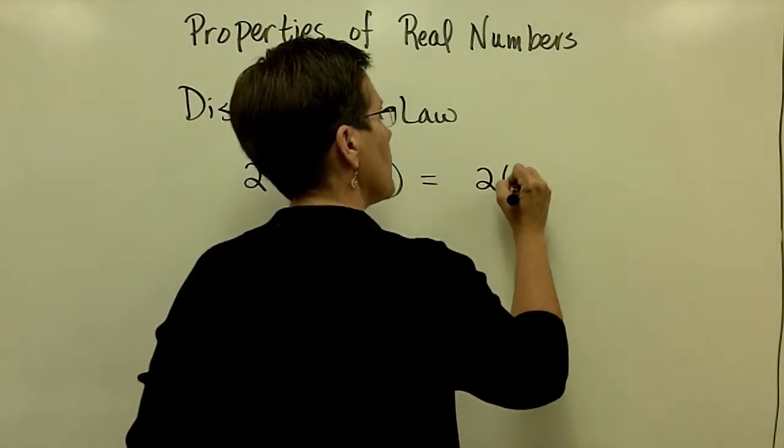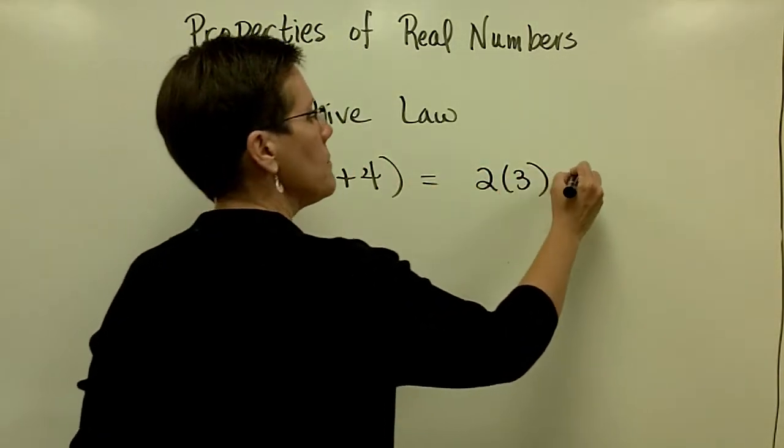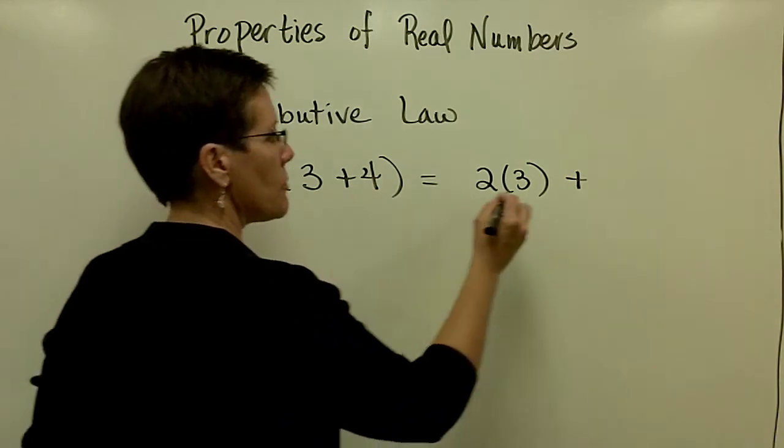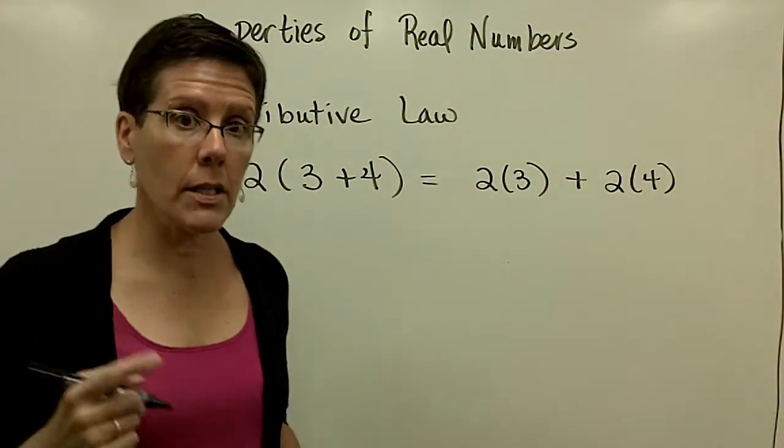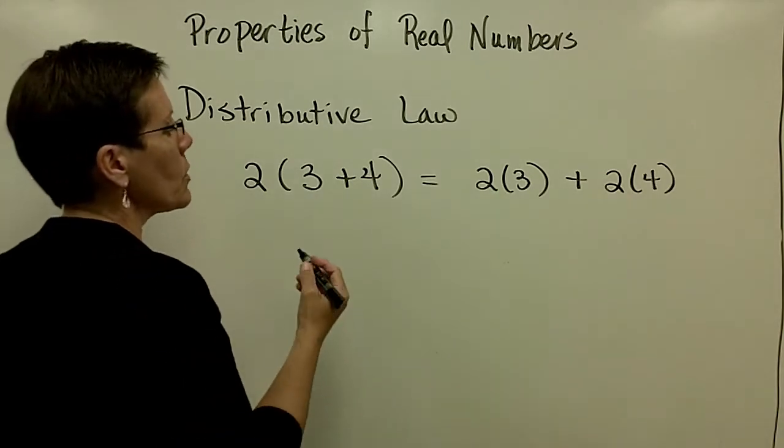The distributive law says that I can take that 2 times that 3, and in this case because I'm adding, that 2 times that 4, and I would get the same results. So numerically, let's look at this via order of operations.